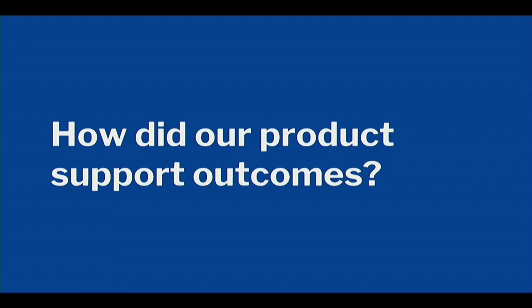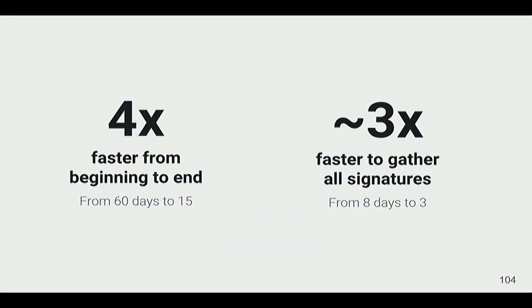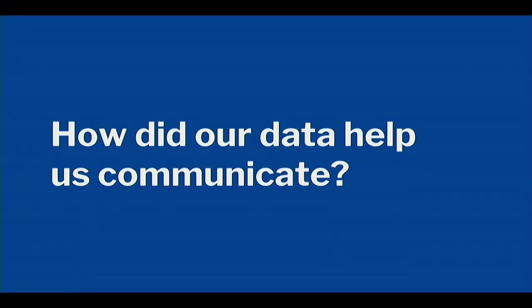Did it work? It did. The whole process from making a data request to when it's delivered and signed off — DEX has helped users go about four times faster. It used to take about 60 days on average; now it takes about 15. For the signature piece specifically — once something is delivered, how long does it take to get approved — we're going about three times faster: it used to take about eight days on average, now it takes about three days.